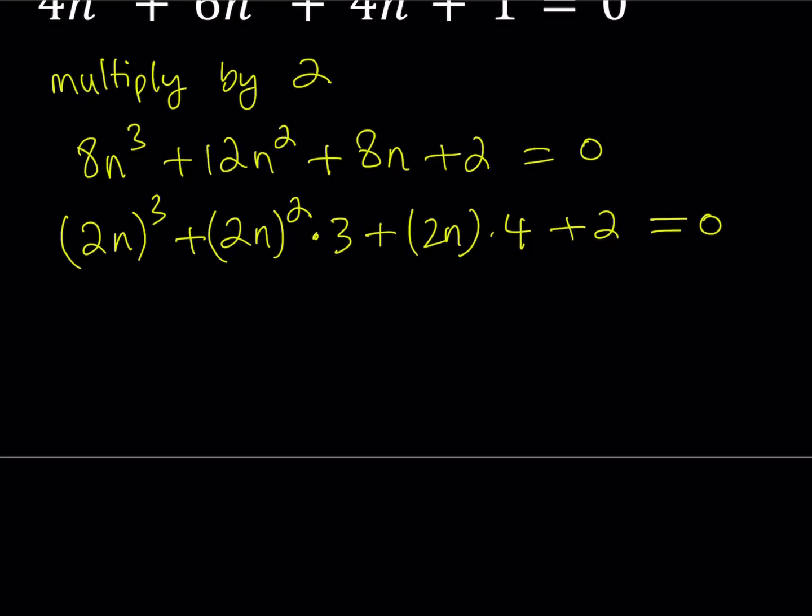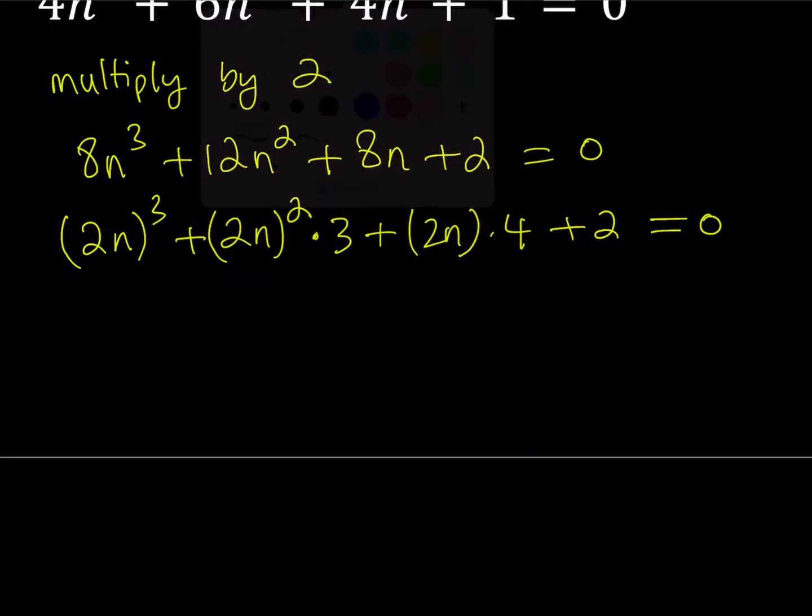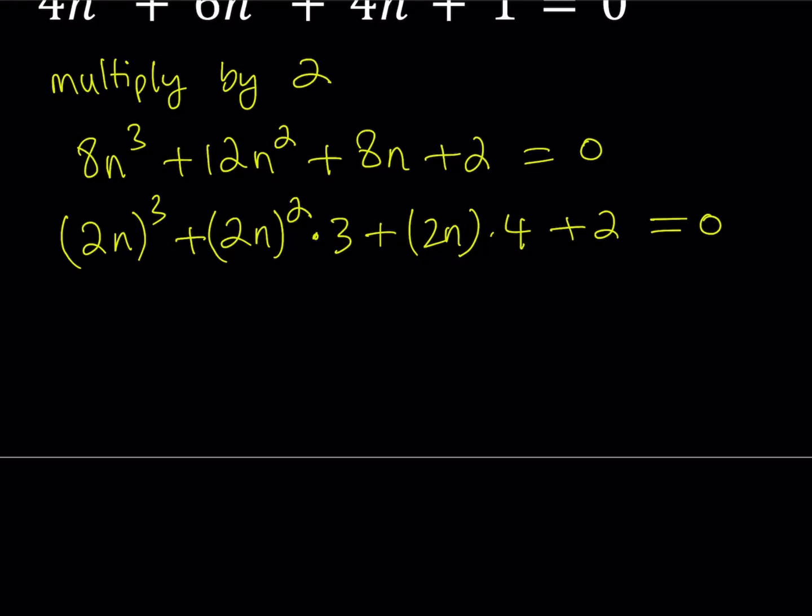Now we want to do the same thing to all the terms. I can write this as (2n)² times 3 plus (2n) times 4 plus 2. Now I'm going to replace 2n with x.